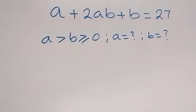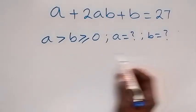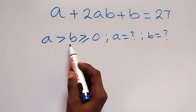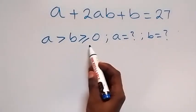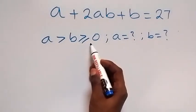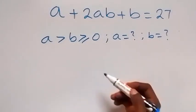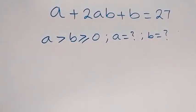Hello, you are welcome. How to solve this nice algebra equation: we have a plus 2ab plus b equals to 27, where a is greater than b, and b is greater than or equal to 0. We want to find the values of a and b.